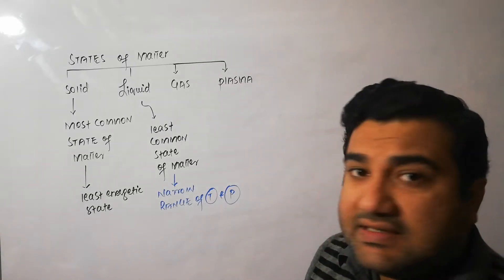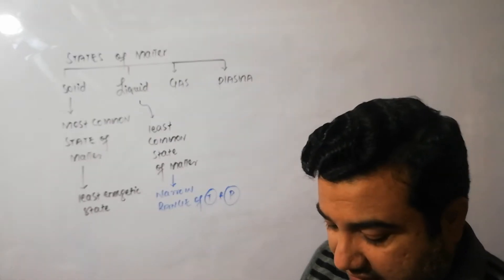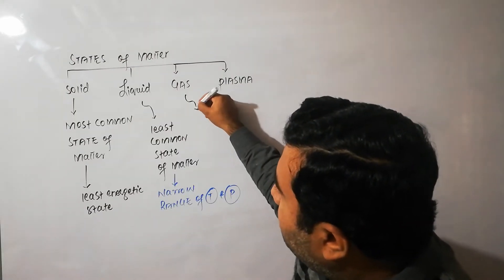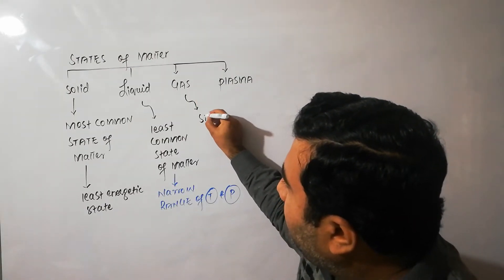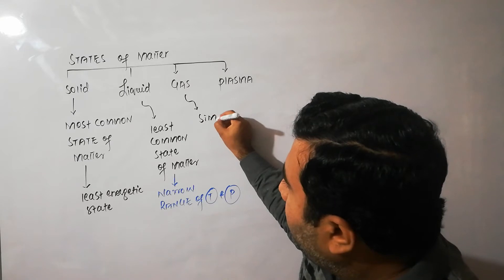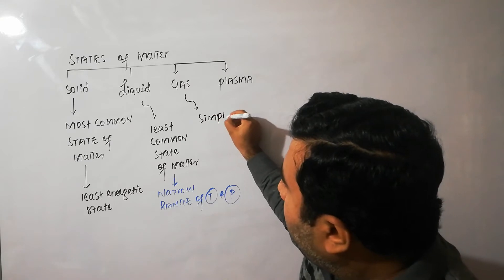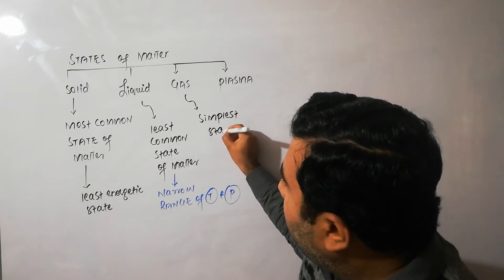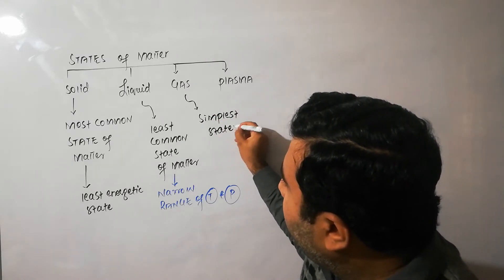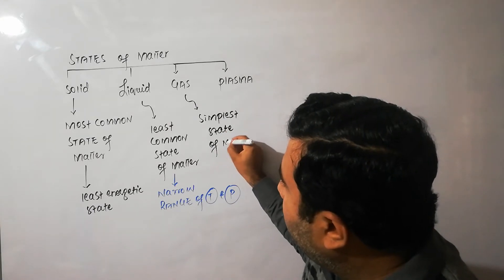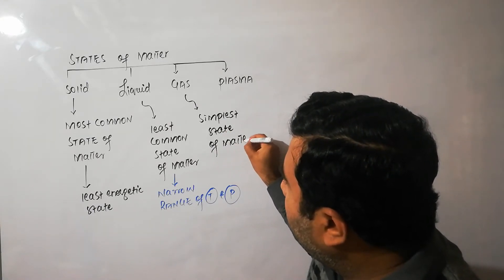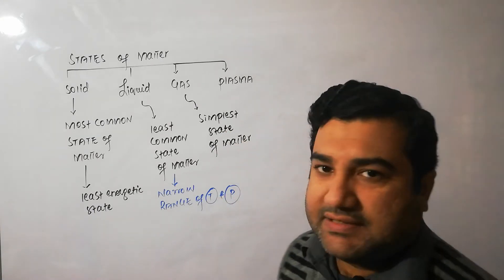The third state is the gaseous state. It is the simplest state of matter because of the weakest intermolecular forces between the gas molecules.